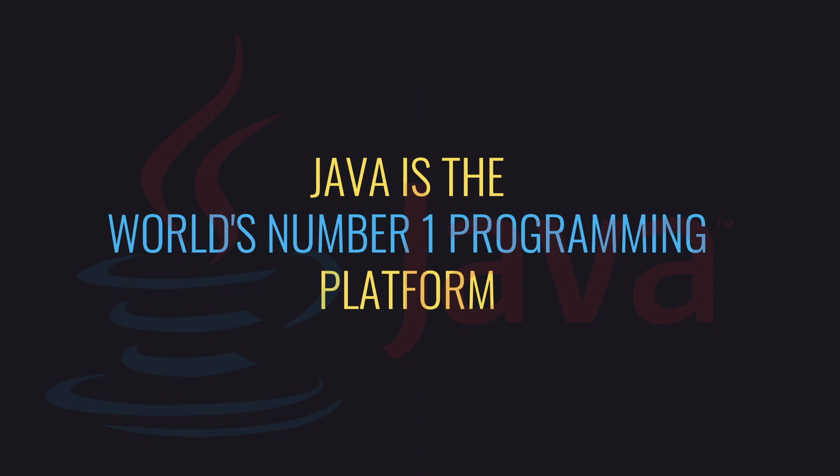The first thing to know about Java is that Java is the world's number one programming platform right now, today in 2021. This is really quite exciting because it means you're on the cusp of learning something extremely valuable and marketable. If you want to have a career as a developer, as a software engineer, then pretty much Java is the best option for you at this particular time, because it's been popular now for well over a decade.